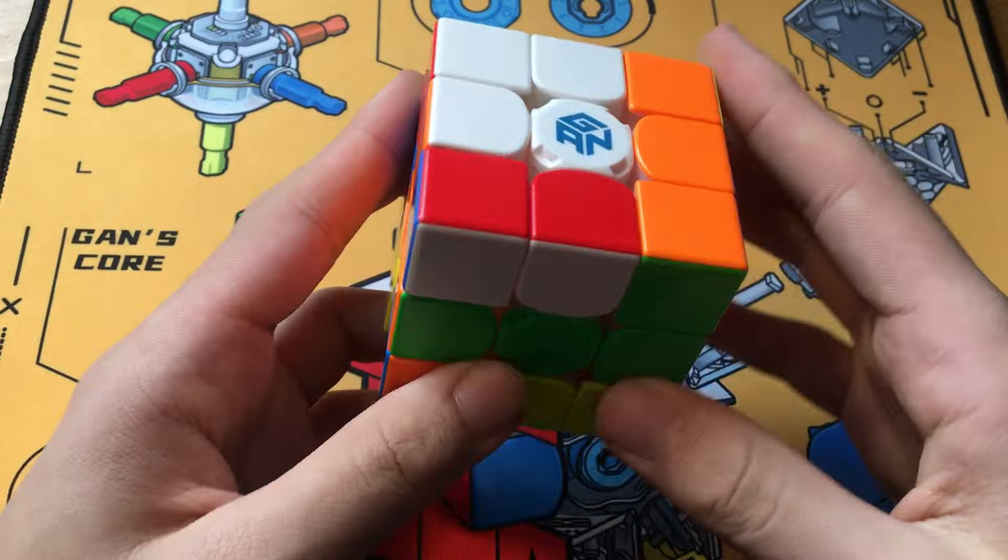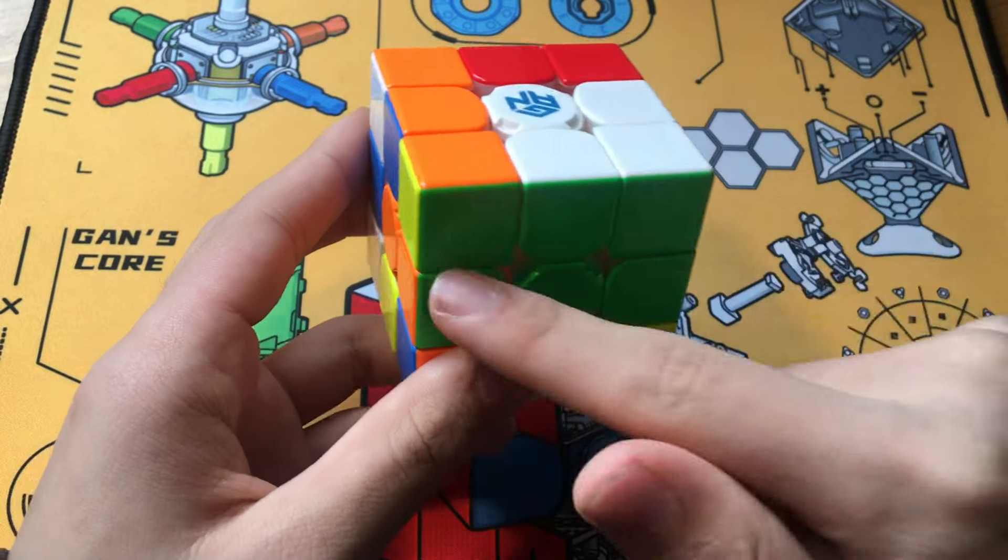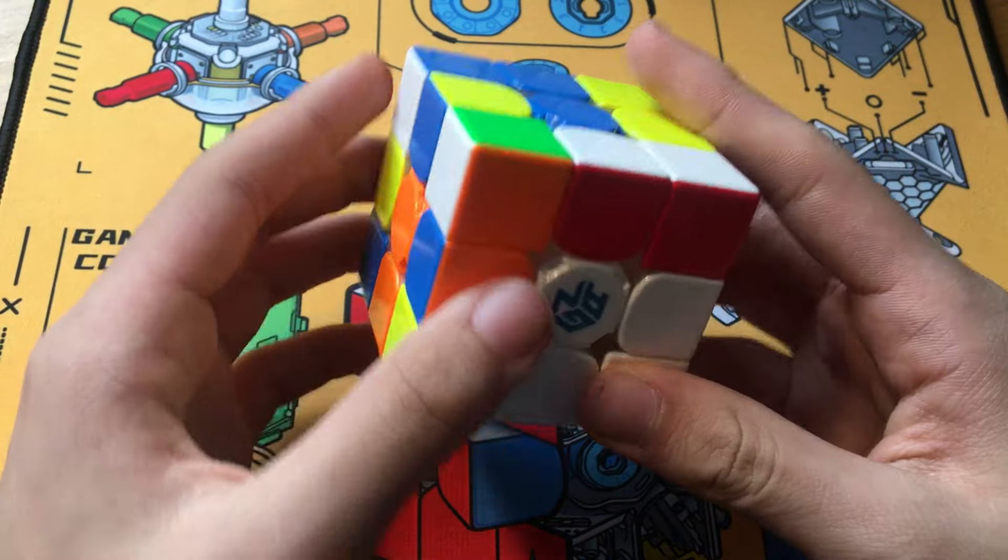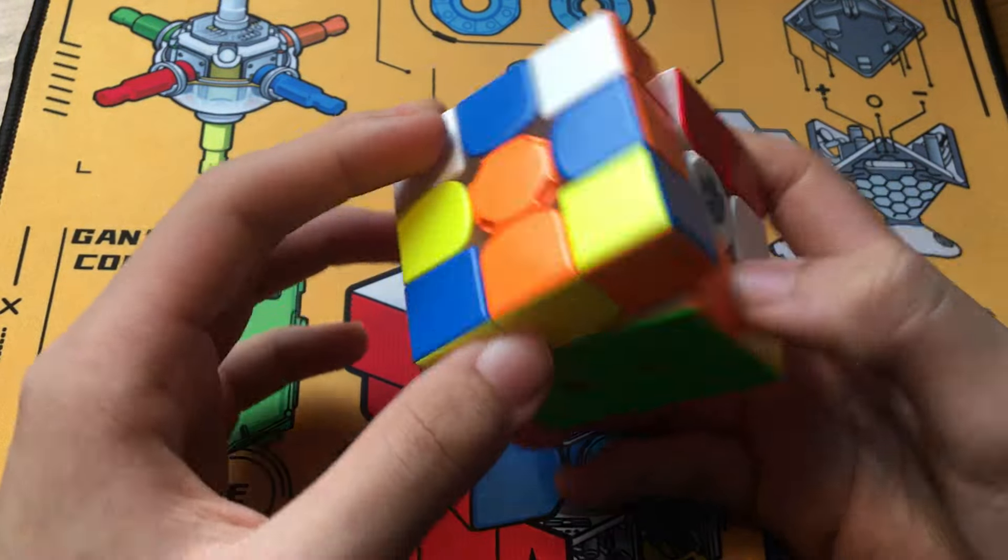First, solving this block into here along with these two solved cross edges, and then inserting the final yellow edge to the left.